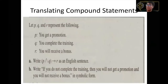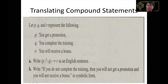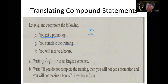Let P = 'You get a promotion,' Q = 'You complete the training,' R = 'You will receive a bonus.' The symbolic form (P ∧ Q) → R as an English sentence reads: 'If you get a promotion and you complete the training, then you will receive a bonus.'